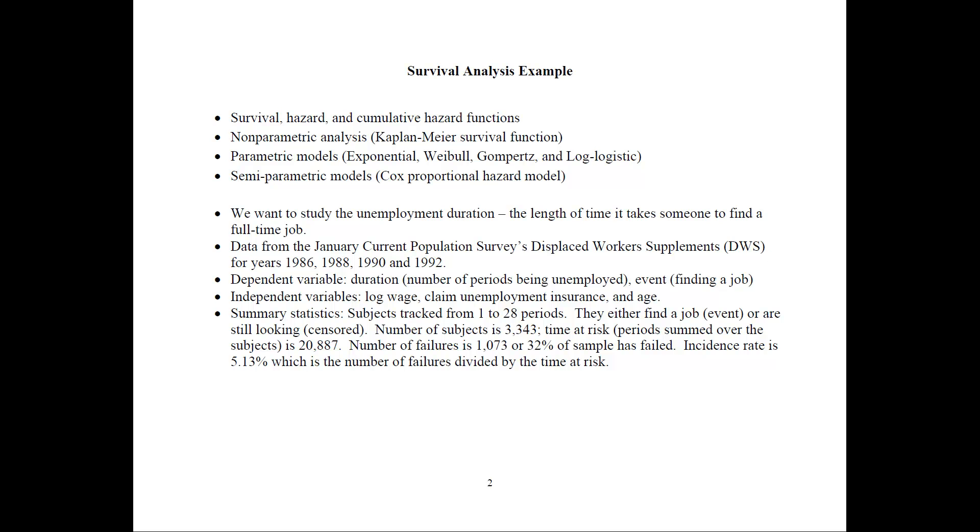The number of subjects in the sample is 3,343, and time at risk, which would be summing up the periods over all the subjects, is 20,887. So we have this many number of subjects, and each of them has from 1 to 28 periods that they're tracked in the sample.